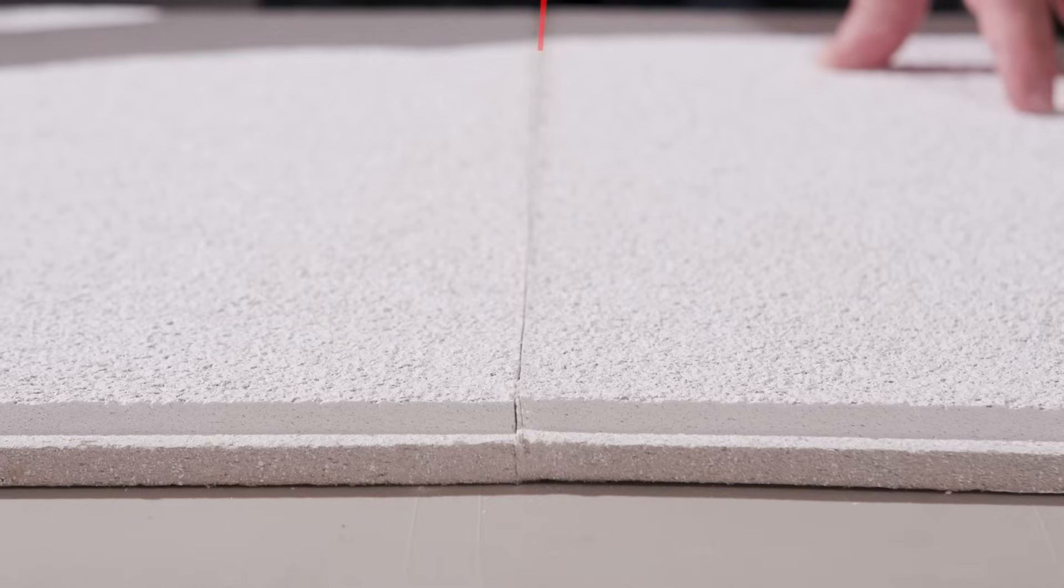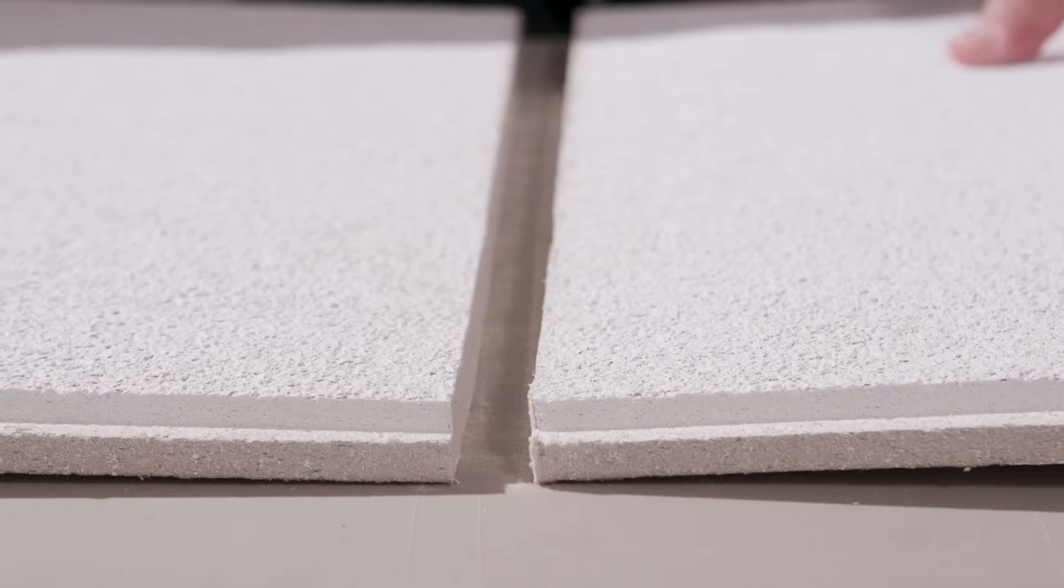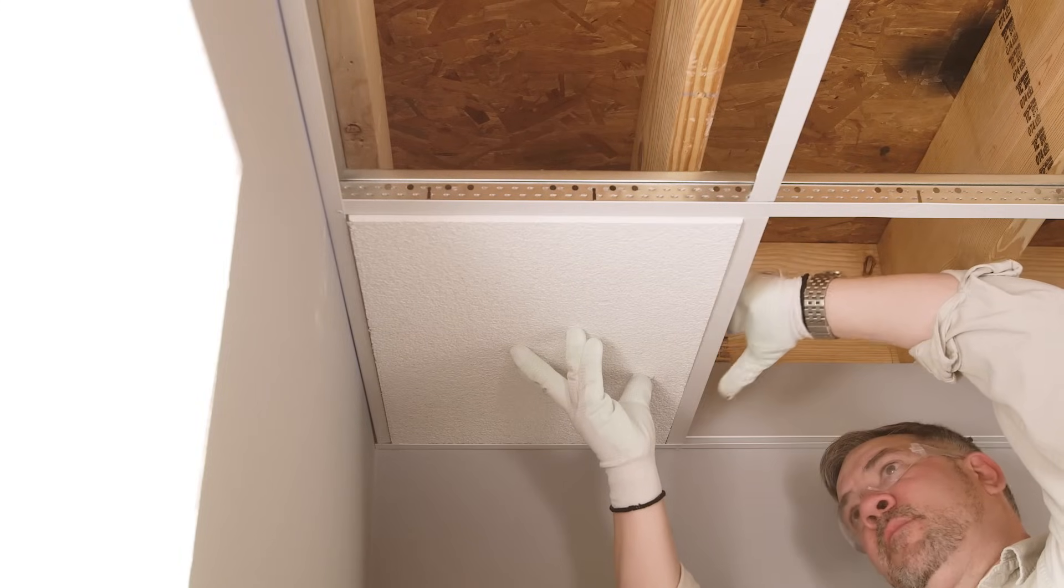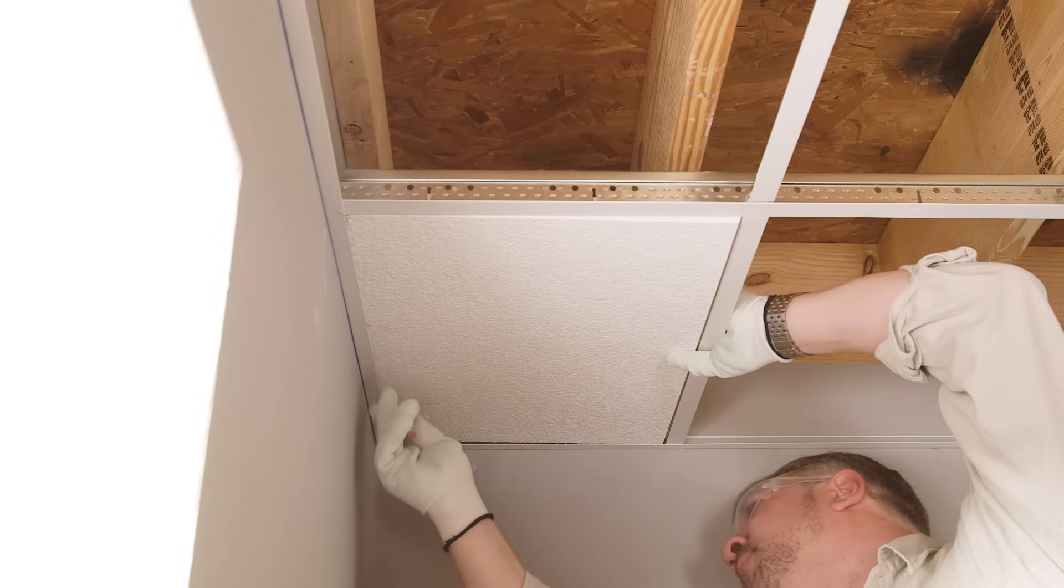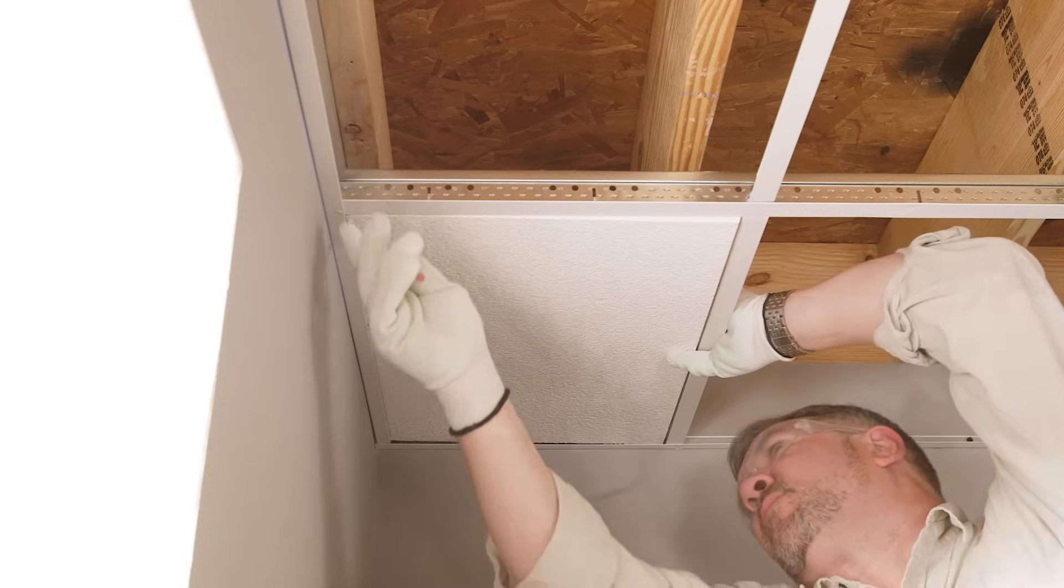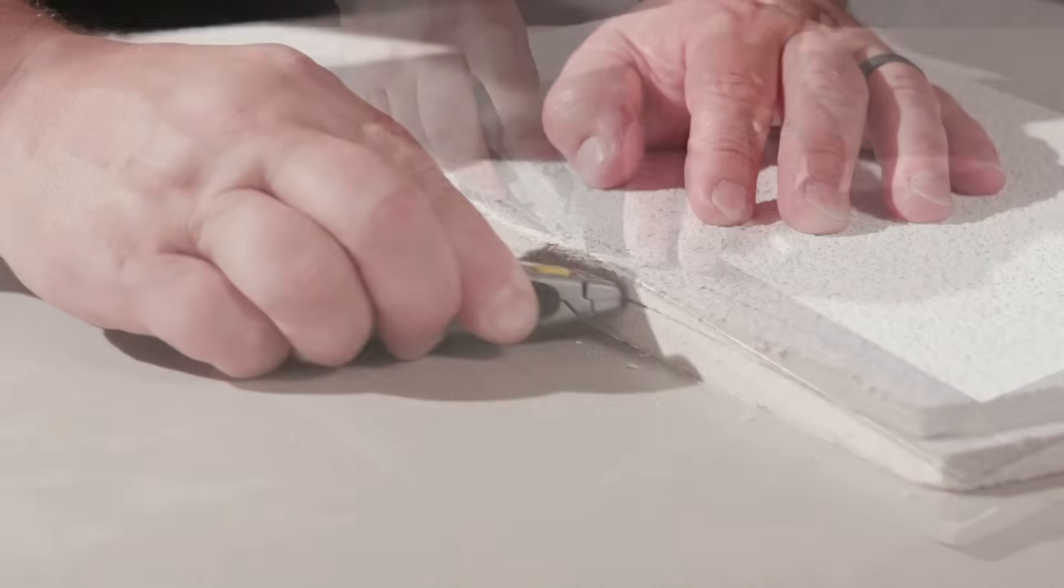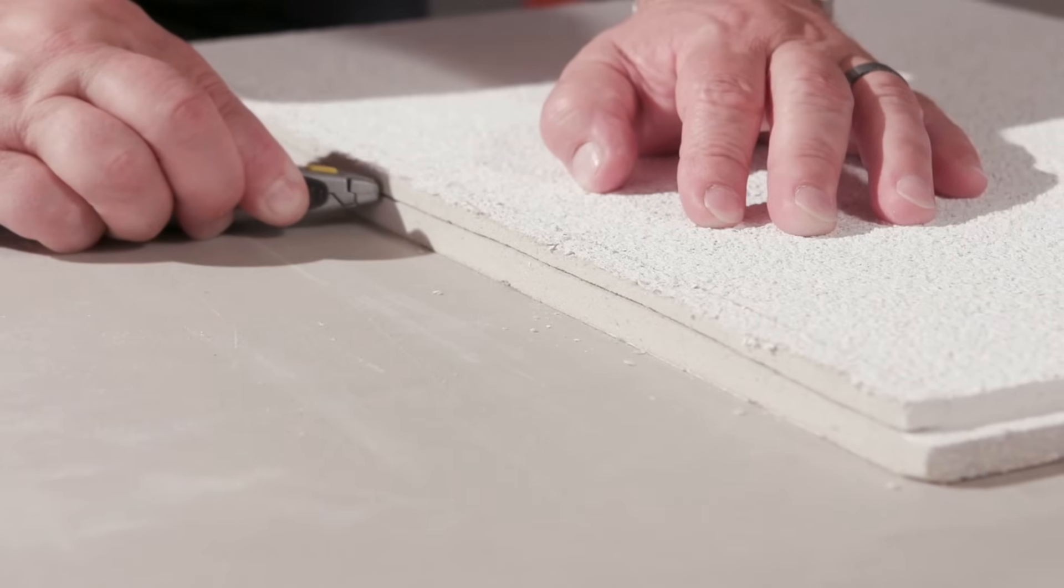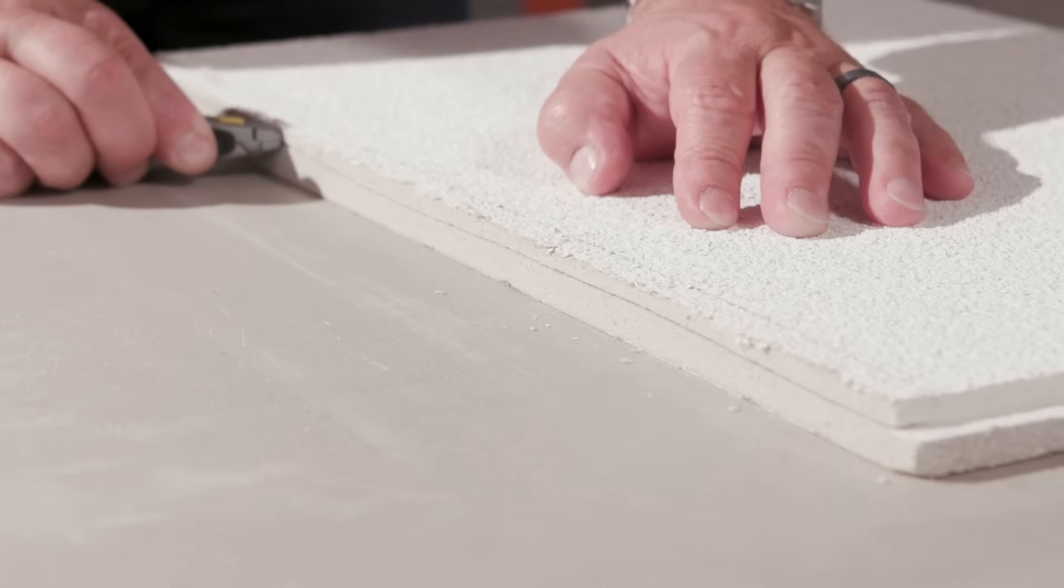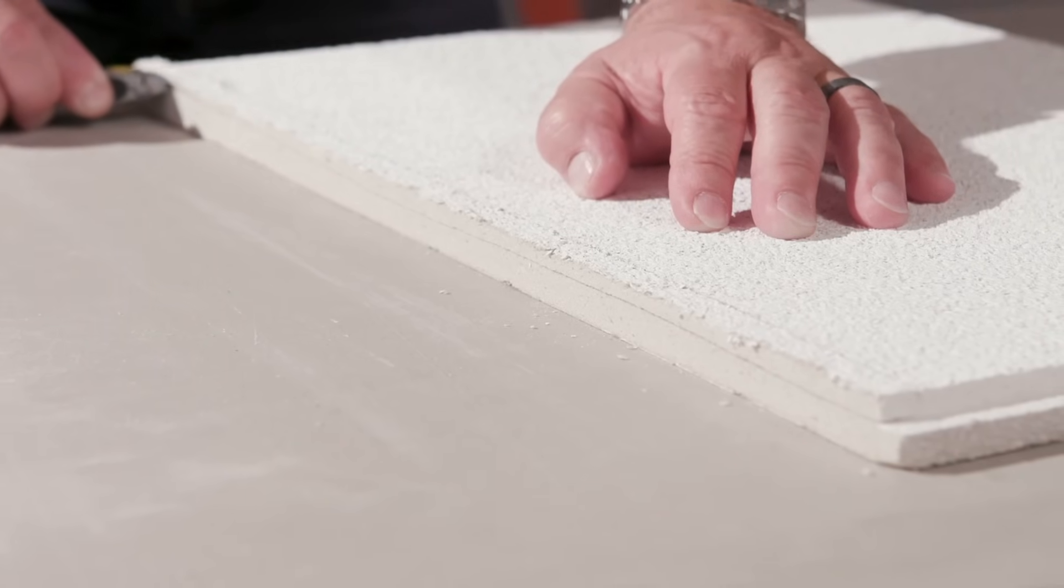Cutting tegular edge tiles: First, trim tegular edge border panels to the same dimensions as for flat panels. The tegular edge must now be cut into the panel. Set the panel into the grid face side down. Draw a light pencil line on the panel using the wall molding as a guide. Remove the panel. Use a sharp utility knife and straight edge to cut halfway through the panel from the face side along the pencil line. Lay the utility knife on its side next to the panel and, with the panel face up, cut into the panel at the tegular edge height to the depth of the first cut. Discard the cut material. If the cut edge of the panel is still visible when installed, paint with a flat white latex paint and install.